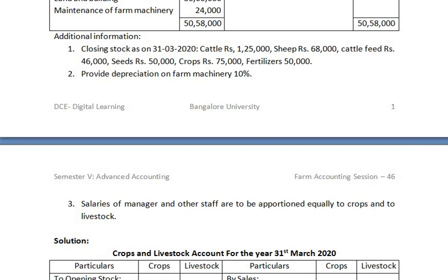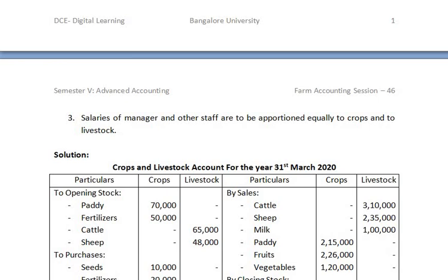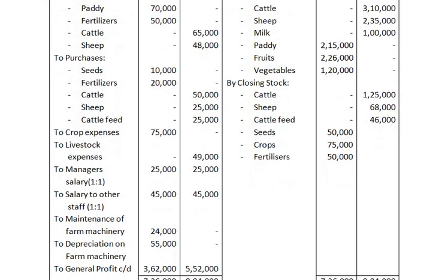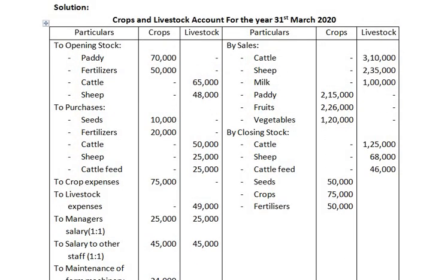Salaries of manager and other staff are to be apportioned equally to the crop account and livestock account. Looking at the crop and livestock account: on the debit side we have recorded opening stock, purchases, crop expenses, livestock expenses, manager salary equally distributed among crop and livestock, salary to other staff equally distributed, maintenance of farm machinery, and depreciation on farm machinery. On the credit side, sales and closing stock have been recorded.